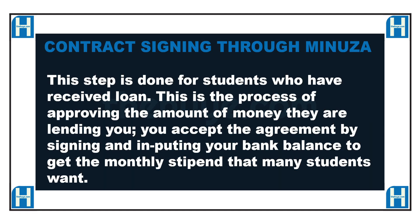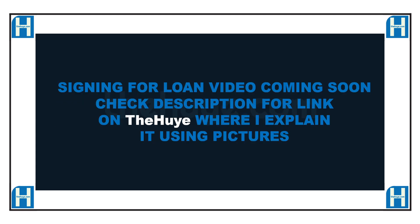Contract signing through Minoza is a process where you accept the BRD agreement by signing the contract and inputting your bank details so that you can receive the monthly stipend that all students need. The video on how to do contract signing through the Minoza system will be uploaded within the next two to three days on this channel, so make sure to check our videos to see it.